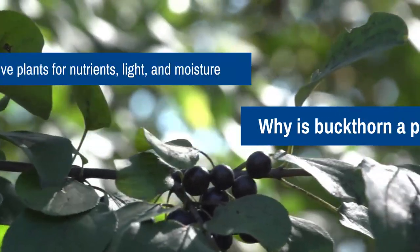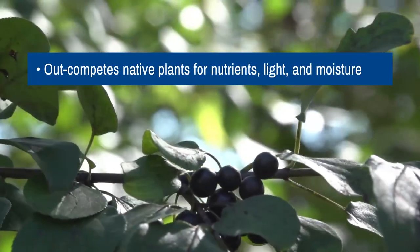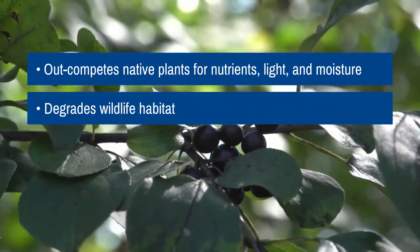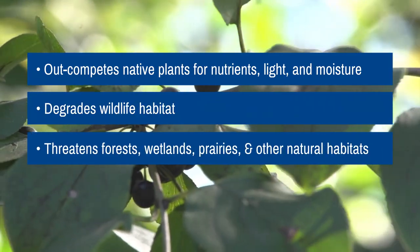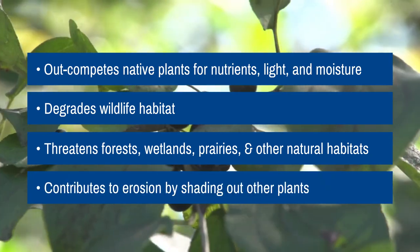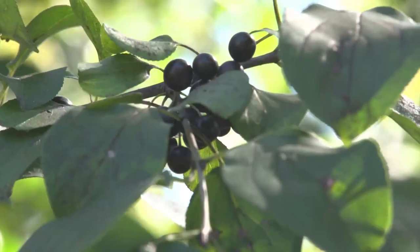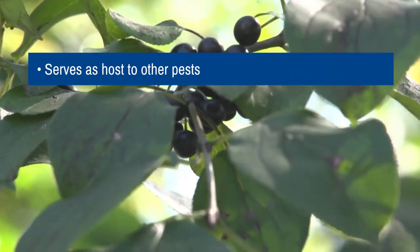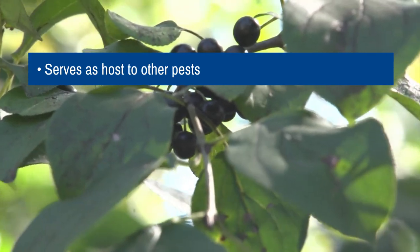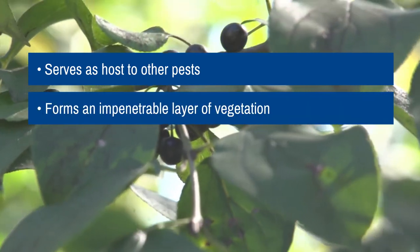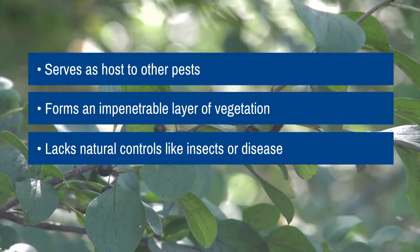Buckthorn is a problem because it out-competes native plants for nutrients, light, and moisture. It degrades wildlife habitat and threatens the future of forests, wetlands, prairies, and other natural habitats. It contributes to erosion by shading out other plants that grow on the forest floor and serves as host to other pests such as crown rust fungus and soybean aphid. Buckthorn forms an impenetrable layer of vegetation and lacks natural controls like insects or disease that would curb its growth.